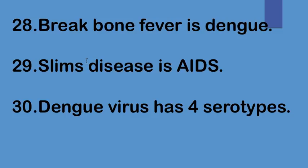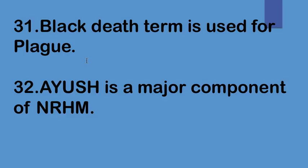Breakbone fever is dengue. Slim's disease is AIDS. The dengue virus has four serotypes. Black death is a term used for plague. IUCD is a major component of the National Rural Health Mission (NRHM).